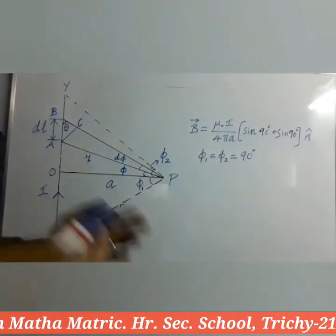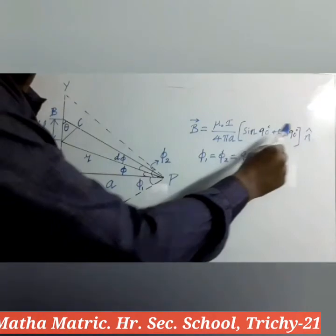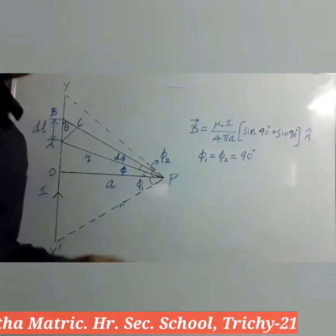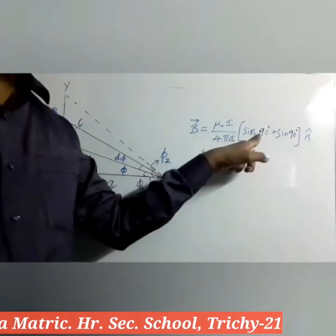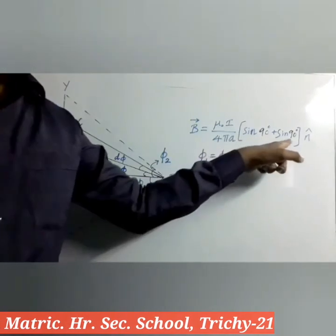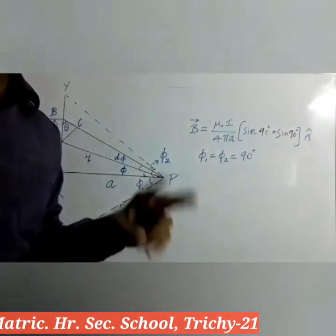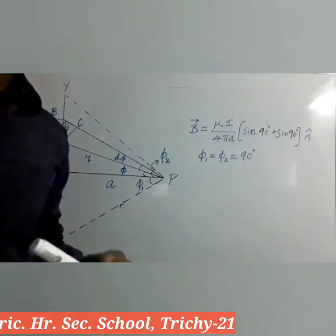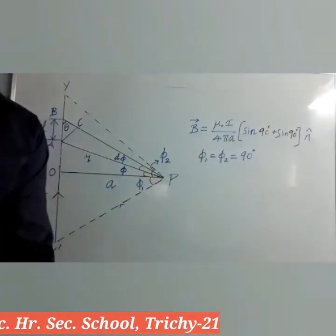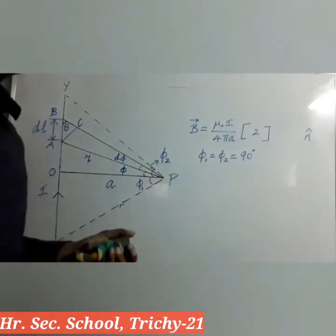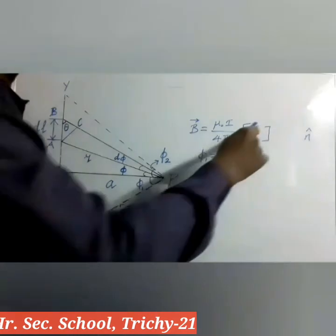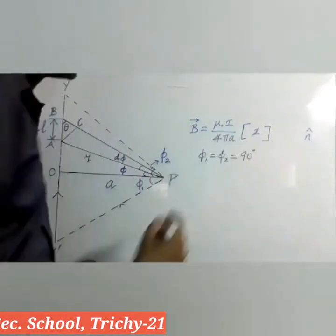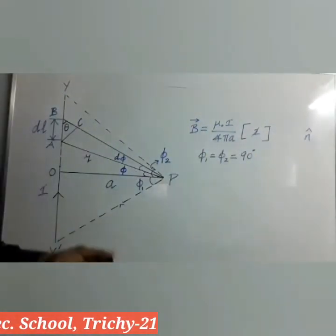Substituting the angle values: sin90° plus sin90°. The value of sin90° is 1. So 1 plus 1 is 2. Within the bracket we write 2. At the denominator 4 is already there, and both 2 and 4 can be cancelled, giving 2 at the denominator.